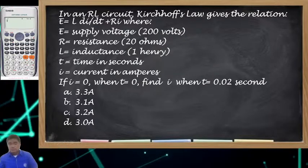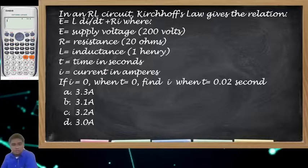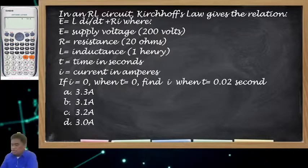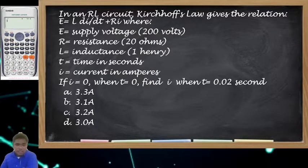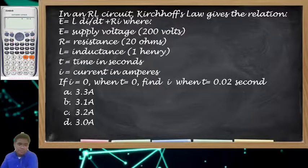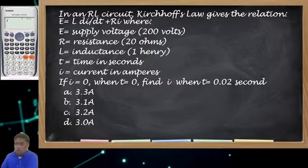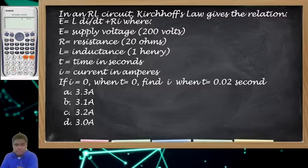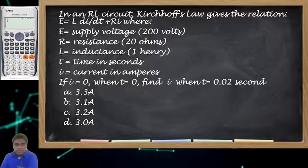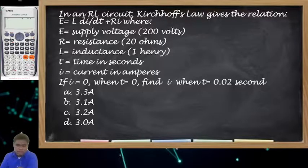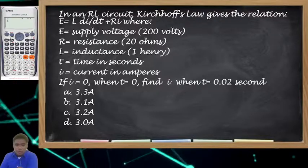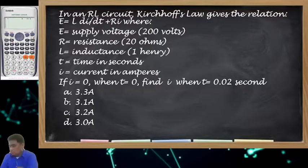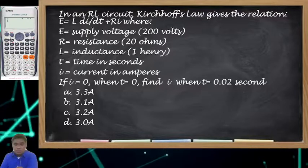We have an example. In an RL circuit, Kirchhoff's law gives the relation: E equals L di/dt plus RI, where E equals 200 volts, R equals 20 ohms, L equals 1 henry, T is time in seconds, and I is the current in amperes. If I equals zero when T equals zero, we need to find I when T equals 0.02 seconds.